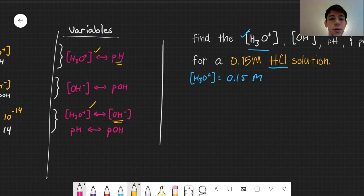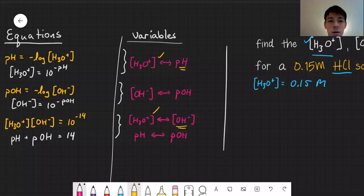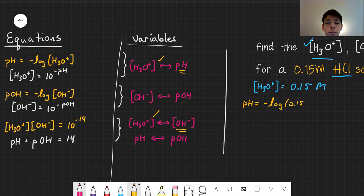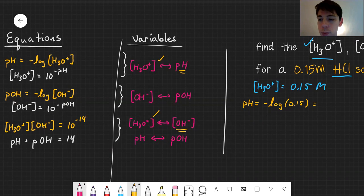pH is negative log of hydronium, or negative log of 0.15. That's going to give us our pH for this expression. Negative log of 0.15 is 0.82.